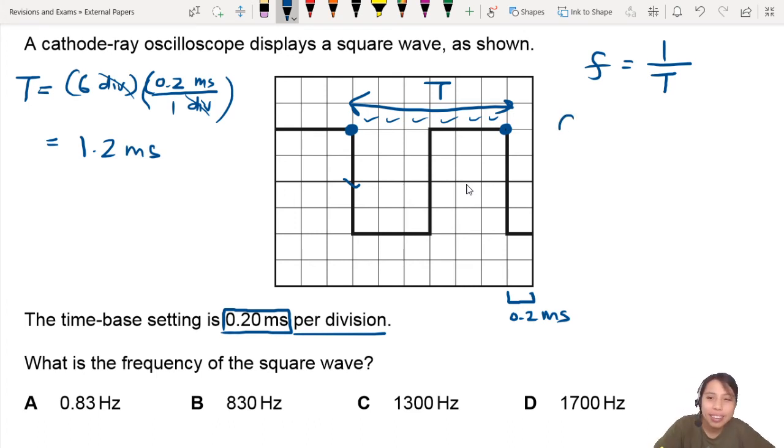So now we can calculate frequency. Frequency will be 1 divided by 1.2 milli. Don't forget to convert to SI units. Then you'll be in seconds because that's what we need for hertz. And you should get about 833 hertz or per second.